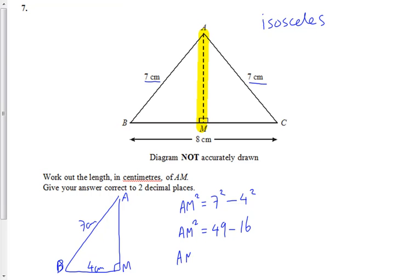Or AM, finding the square root after you've subtracted, is the square root of 33. And that's approximately equal to 5.7456 centimeters.